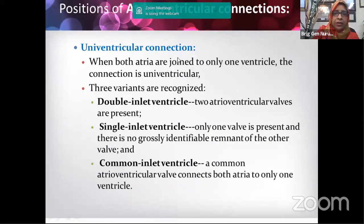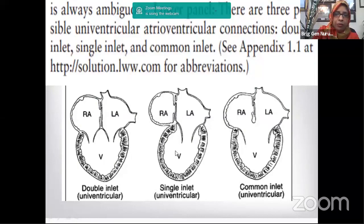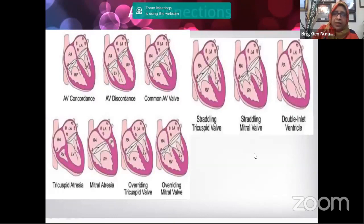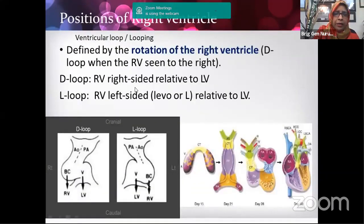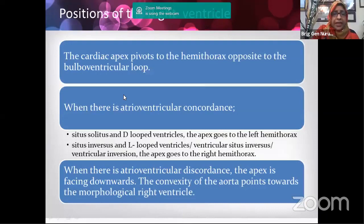In D-loop heart, the right ventricle remains on the right side of the left ventricle; in L-loop, the right ventricle is on the left side. The position of the aorta is always described in relation to the pulmonary artery, which is the fixed reference. The aorta can be in any position around the pulmonary artery: right lateral (dextral), right anterior (D-malposed), or left anterior (L-malposed). These three positions are the most common. The right anterior aorta is commonly associated with D-transposition of great arteries; left anterior aorta is associated with congenitally corrected transposition (L-TGA); dextroposed aorta is associated with tetralogy of Fallot and double outlet right ventricle.